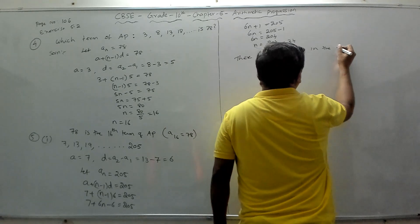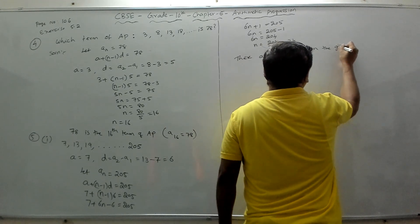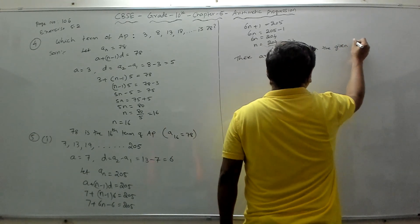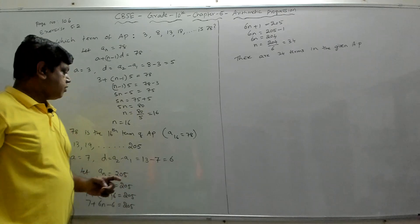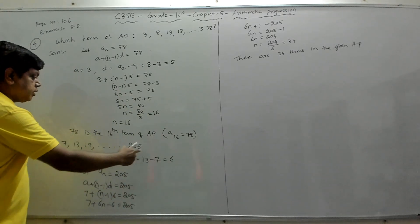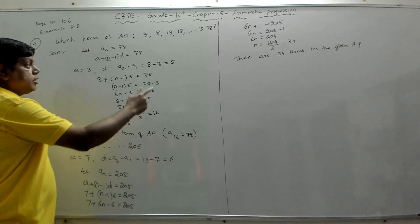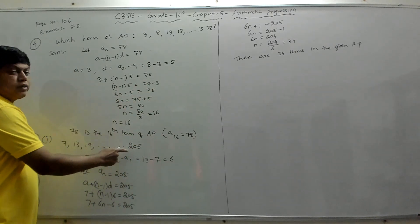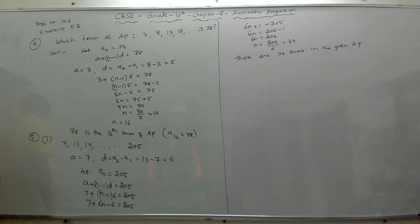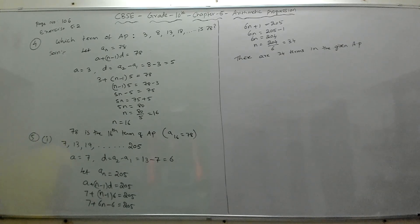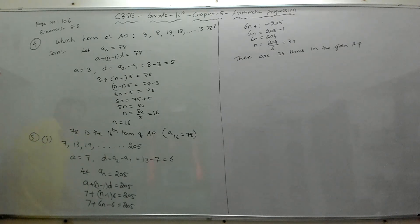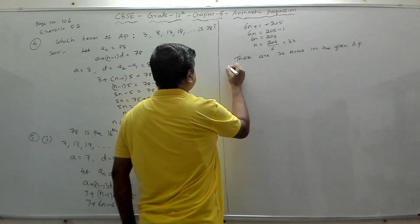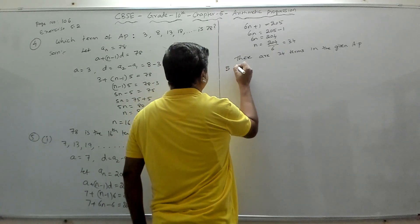So the given arithmetic progression has 34 terms, because 205 is the 34th term. Now the second part of question 5.